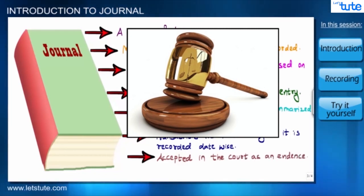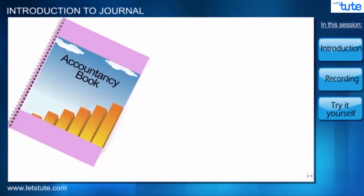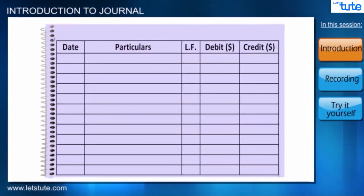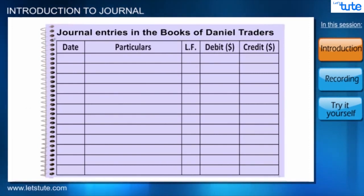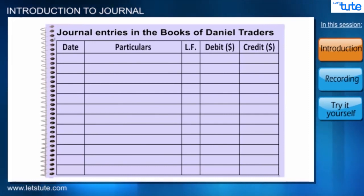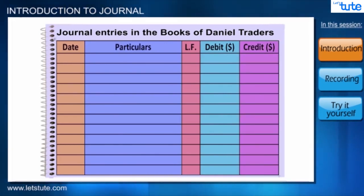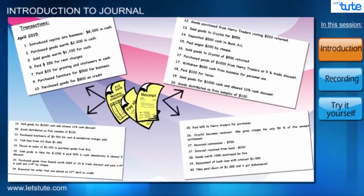This book of original entry is also acceptable in court as evidence if any disputes arise in future. So before we proceed, everyone be ready with your book and pen so we can record the transactions together. This is how a journal looks like. As we are recording entries in the books of Daniel's business, at the top of the page we write 'Journal Entries in the Books of Daniel Traders.' There are in total five columns on this page.